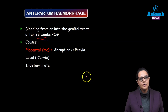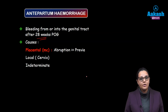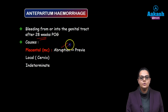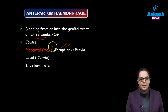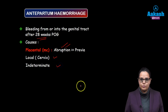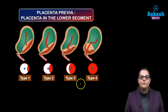What is the most common cause? The most common cause is placental, and in that, abruptio placenta is commoner than placenta previa. The bleeding can also occur from the cervix, or it can be indeterminate too. So let's discuss them one by one.